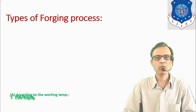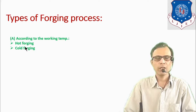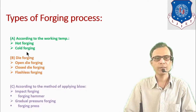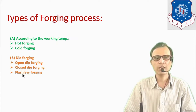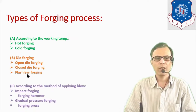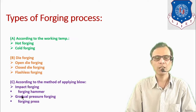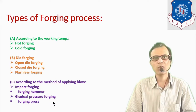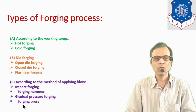Now let's see the types of forging process. The first type is classified according to working temperature: it may be hot forging or cold forging. According to the process or die type, there are subtypes like open die forging, closed die forging, and flashless forging. According to the method of applying the blow, it can be classified as impact forging — done by a forging hammer — and gradual pressure forging, where pressure is applied gradually and continuously with a forging press.